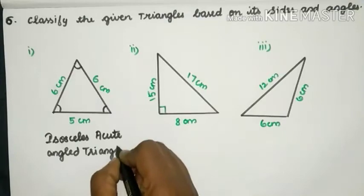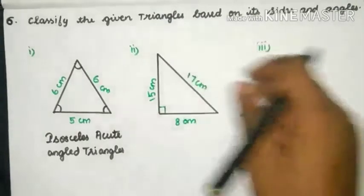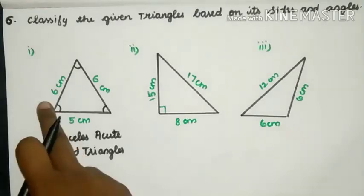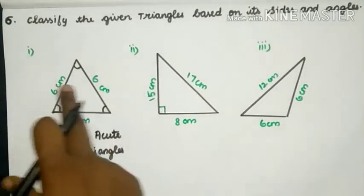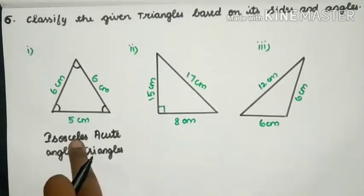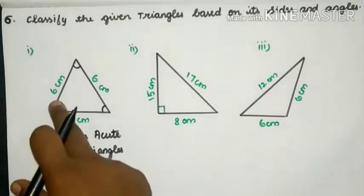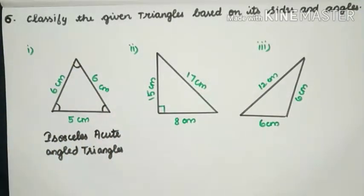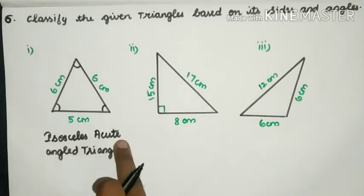Is it clear now? We have to classify the given triangle based on its sides and angles. Here, two sides of the triangle are equal, so it is an Isosceles triangle. And all three angles are acute, so it is called an Isosceles Acute Angled Triangle.